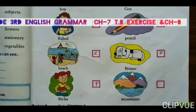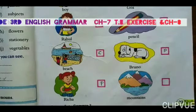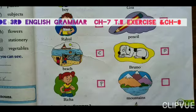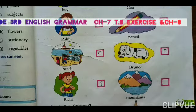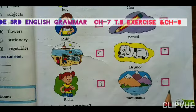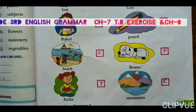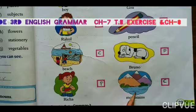And next is 'mountain.' No specific name has been given — only 'mountain' is written. So there is no particular proper name for the mountain. Therefore, we will write common noun here. There are so many mountains. But if there is a name of a mountain, then we will write proper noun.